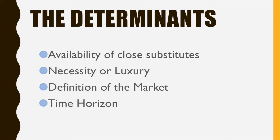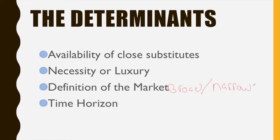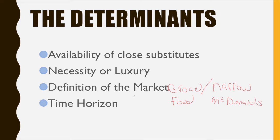The third determinant is the definition of the market, which is divided into two subcategories: is the good a broadly defined market or a narrowly defined market? A broadly defined market contains many different types of goods — for example, food. A narrowly defined market might be McDonald's. There are lots of substitutes for McDonald's, but no substitutes for food.